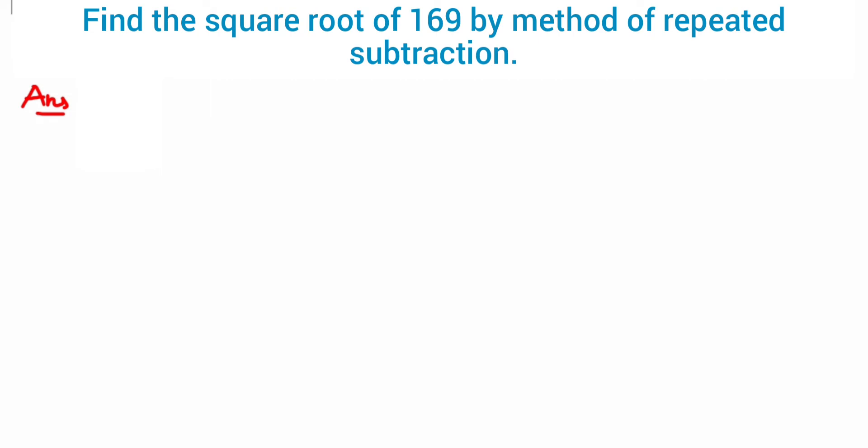Hey everyone, the question here is find the square root of 169 by method of repeated subtraction. So we're going to subtract 169 by the odd numbers. The first number is 1, so we got 168. We have to keep on subtracting 169 with the odd numbers. Remember we should not skip any odd number, they have to be consecutive.